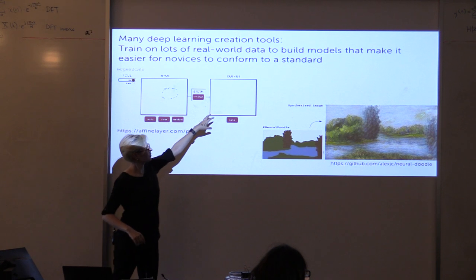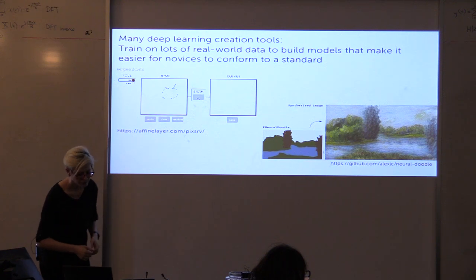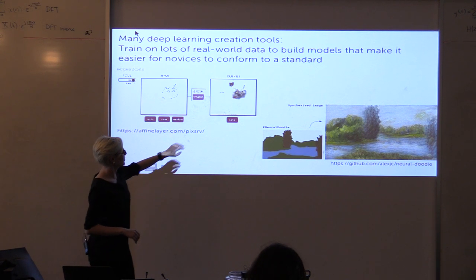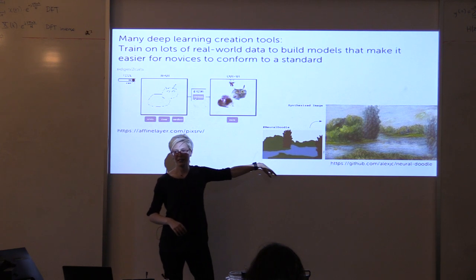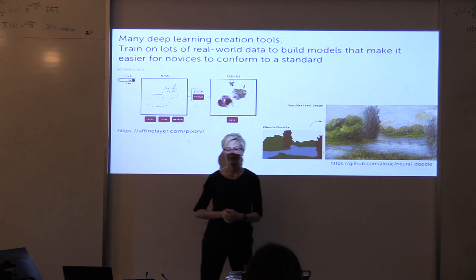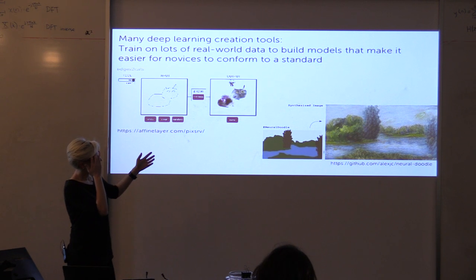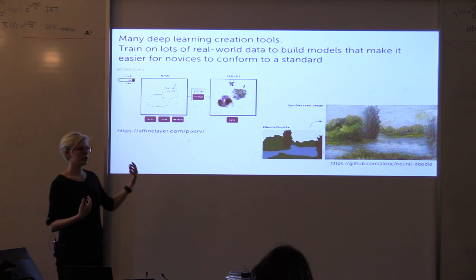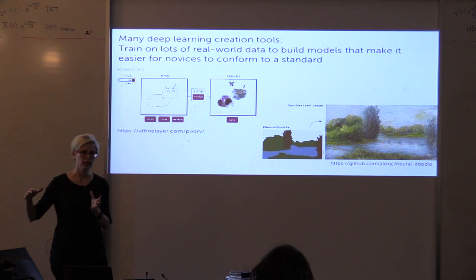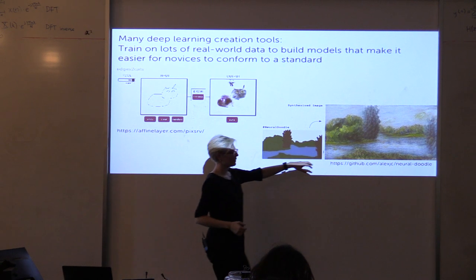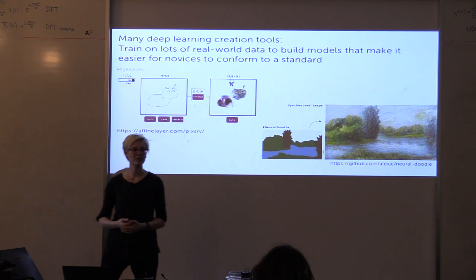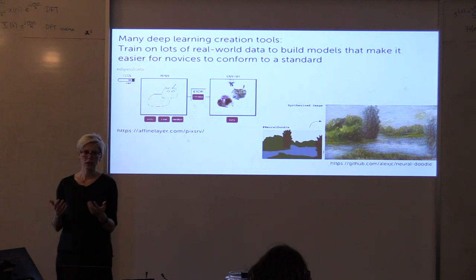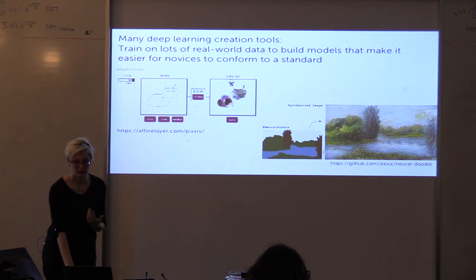A lot of the deep learning generative tools out there are also getting attention because they give different ways for people who aren't professional creators to have an entry point into making stuff that looks or sounds really cool. Two of my favorites: Edges to Cats, which lets you make a sketch and it fills it in with the most cat-like result it can generate; and Neural Doodle, which basically gives you Microsoft Paint and turns it into a great work of art. These do increase accessibility to small-c creative interaction, but they do it by giving people training wheels — assuming you want to adhere to some standard, trained on large datasets of what people think of as the right way to do art. Which is okay and cool, but also inflexible in some ways.